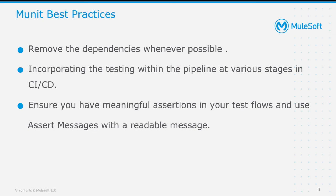Remove dependencies whenever possible. All dependencies on external systems like third-party services, servers, or legacy systems should be removed so that testing can be done faster and more efficiently. For example, an API might have dependencies on other APIs or components. As a best practice, these dependencies should be mocked with the expected responses, thereby making the test cases as portable as possible. Using event processors like Mock When under the MUnit tools, we can mitigate any unforeseen or costly delays due to the unavailability of these APIs or components.